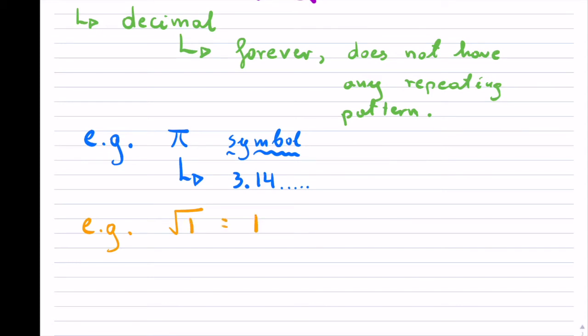So if you take the square root of 1, it actually equals 1. Now, that is a natural number or a whole number and so on. So that is not irrational.